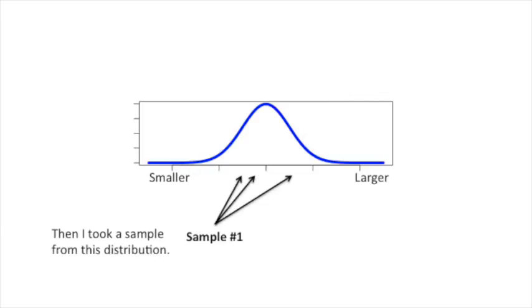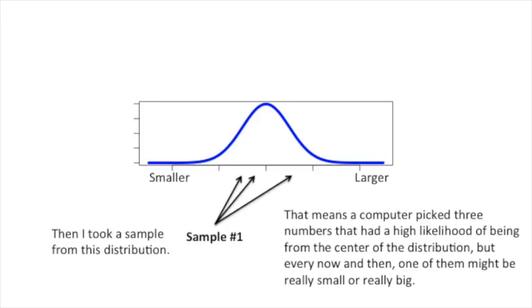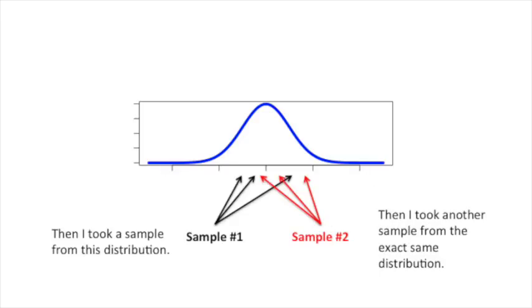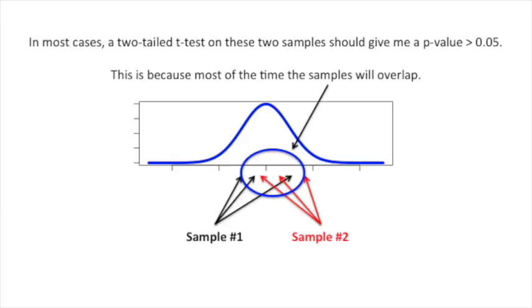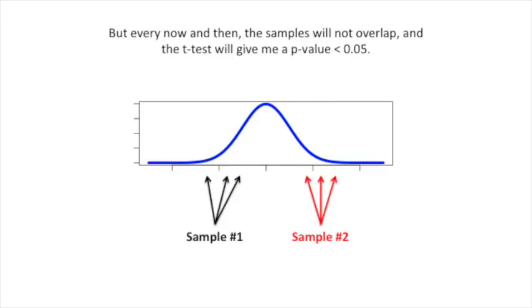Then I took a sample from this distribution. That means a computer picked three numbers that had a high likelihood of being from the center of the distribution, but every now and then, one of them might be really small or really big. I then took another sample from the exact same distribution. In most cases, a two-tailed t-test on these two samples should give me a p-value greater than 0.05. This is because most of the time, the samples will overlap. But every now and then, the samples will not overlap, and the t-test will give me a p-value less than 0.05.